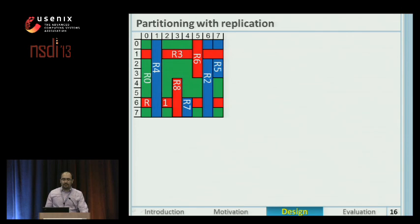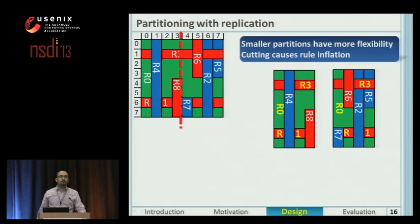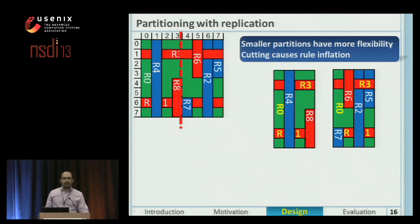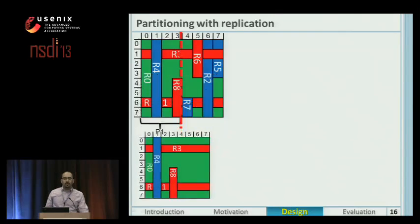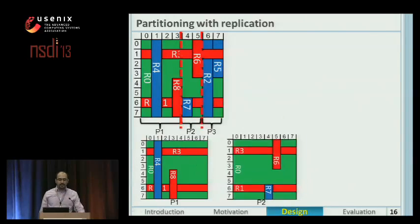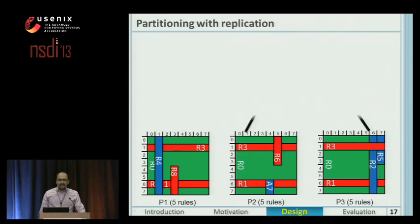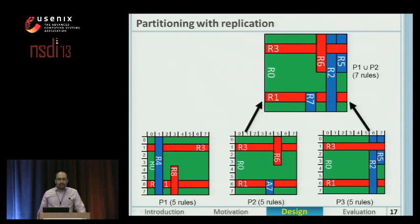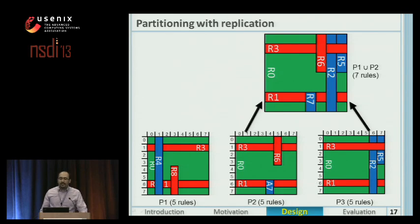So a partition is a set of rules. If we cut rules into multiple partitions to have smaller partitions for more flexibility in minimizing the traffic overhead, we end up with rule inflation. Instead of cutting, we propose partitioning with replication, where we keep rules in their original shape in the partitions. For example, here we have three partitions — P1, P2, and P3. Now, if we save two partitions on the same device, we can easily merge the common rules by comparing their IDs.